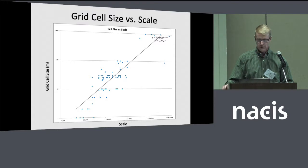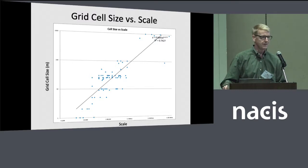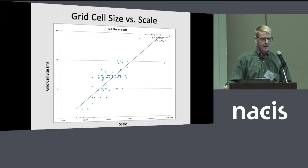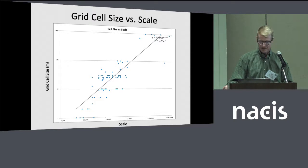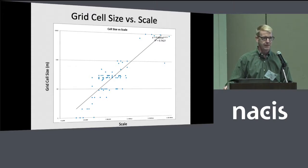Authors were working with different grid cell sizes — that's somewhat different from the publication scale. They're using a certain grid cell size to make an image at a certain scale. As we would expect, as the scale of the map goes up, the grid cell size goes up as well — a fairly linear trend, though with many exceptions. One notable thing near the bottom of this figure is that people are using finer and finer resolution DEMs to make maps even at medium scale, because people always want to use the best data available.